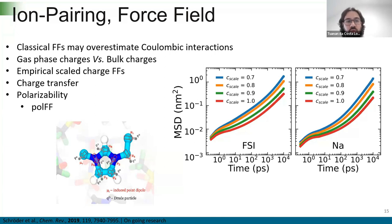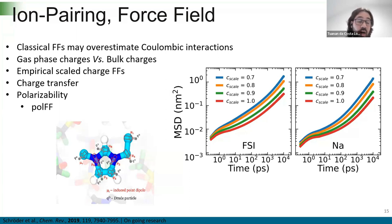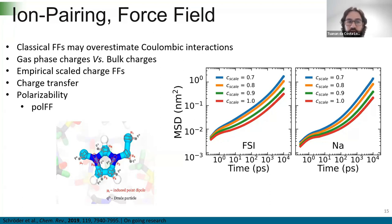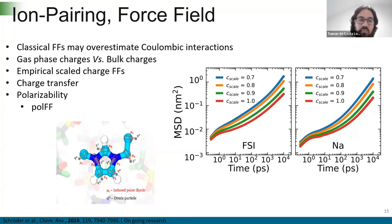How can we overcome these problems? We can use empirical scaling of the charges — simply multiply the charges by a constant (typically between 0.7 and 0.8) to better reproduce experimental data. Or we can derive charges using dimers, clusters, or bulk phase configurations and use those in the MD simulations. Or we can use polarizable force fields, which explicitly describe polarizability in the system, giving a better description of ion pairing and improving results.